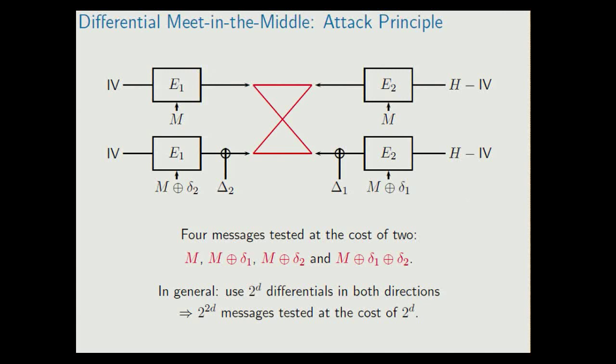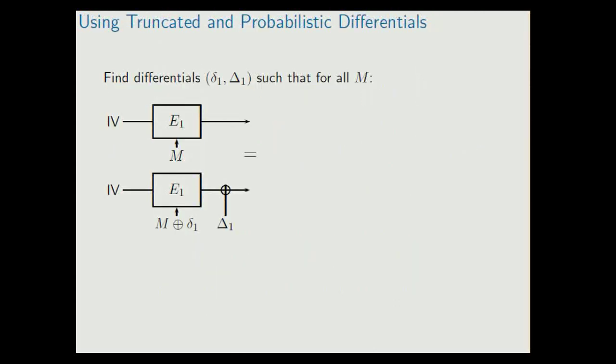So now, as I said, the critical part is do such differentials exist? And for SHA-1, they exist like this if E1 and E2 only compute 15 steps. So in total, we can attack 30 steps. To attack more steps, we have to lower the assumptions on these differentials. And in differential cryptanalysis, it's very natural what you have to do. You have to allow for probabilistic differentials and for truncated differentials. Both are very common concepts in differential cryptanalysis that we just use here for meet-in-the-middle attacks.